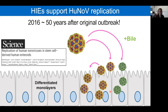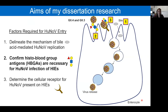The aims of my dissertation research were focused on entry factors. I wanted to delineate the mechanism of bile acid-mediated infection, which I won't speak about today but was a big focus of my thesis. I also wanted to confirm the importance of histo-blood group antigens in human norovirus infection of HIEs, and use this information to determine the cellular receptor for human norovirus, which we are still working on.